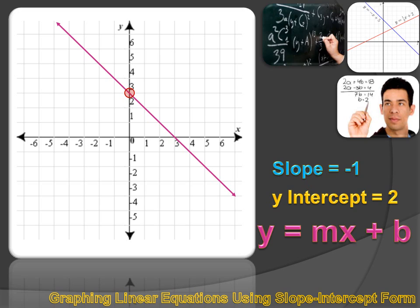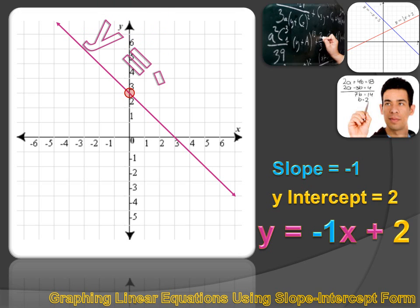So this line has a slope of negative 1 and a y-intercept of 2. You need to memorize this formula: y equals mx plus b. That m stands for the slope of the line. If I replace m with the actual slope, minus 1, my equation becomes y equals minus 1x plus b. And b is the y-intercept. In this case our y-intercept is 2, so if I replace b with positive 2, my equation becomes y equals minus 1x plus 2. The equation for this line is y equals minus x plus 2.